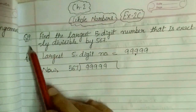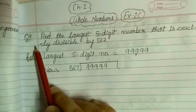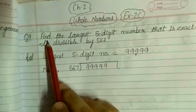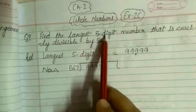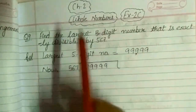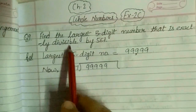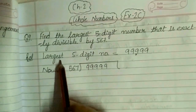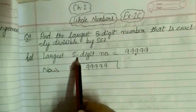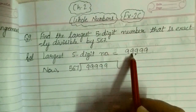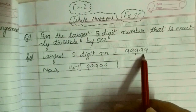Now firstly, I have taken question number 9. This question says: find the largest 5-digit number that is exactly divisible by 567. Now students, you already know that the largest 5-digit number is 99,999.